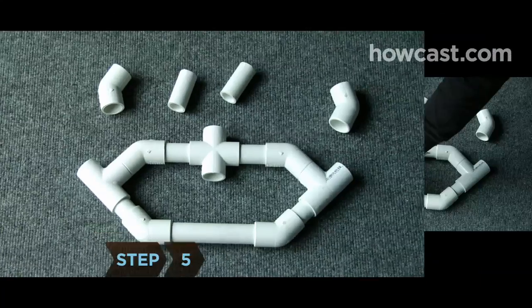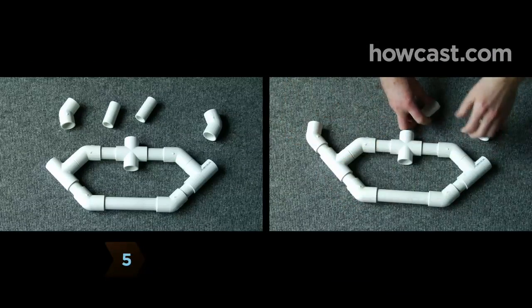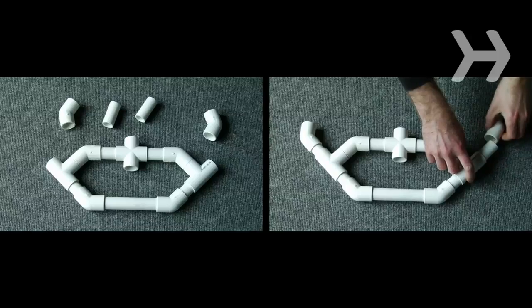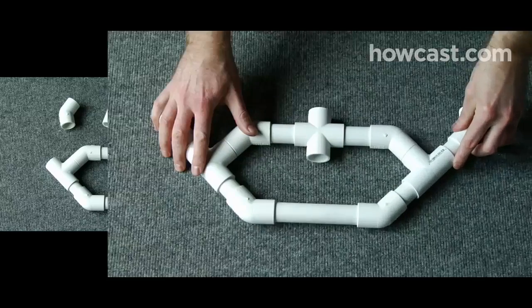Step 5. Add the remaining two 2.5-inch PVC pipe pieces to the open holes on each T-connector, and attach elbow connectors to the pipes.